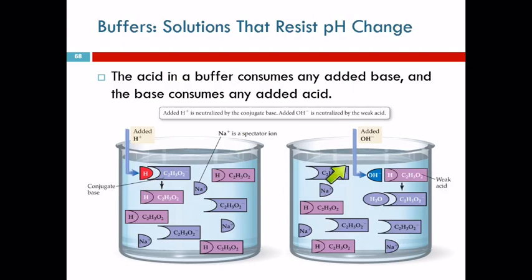If we add hydroxide, the hydroxide is looking for a hydrogen ion to become a water molecule. If we just throw this in here, the hydroxide ion concentration is going to go up, and that's going to affect the pH. But there's weak acid here.